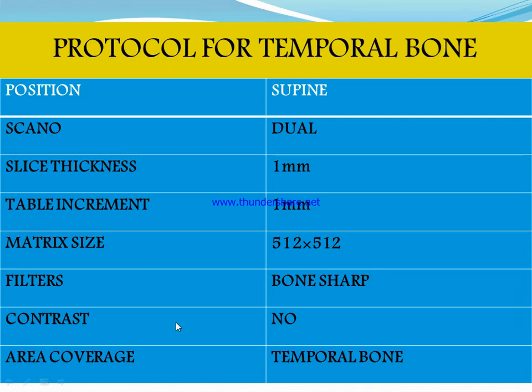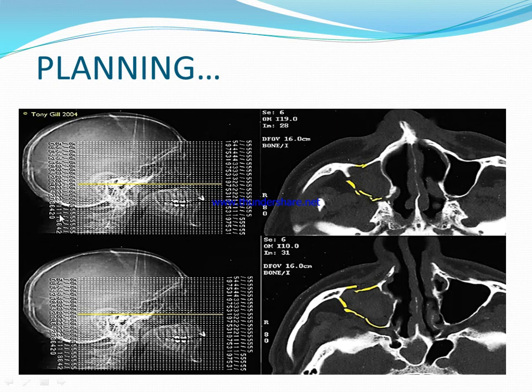In the temporal bone protocol: the patient is in supine position. We use a dual scanner with a slice thickness of 1 mm, table increment of 1 mm, and matrix size of 512 x 512. Filters used are bone and soft tissue filters. No contrast is used. Area coverage is limited to the temporal bone only, as we use a targeted B-scan for HRCT temporal bone.